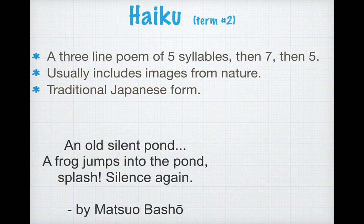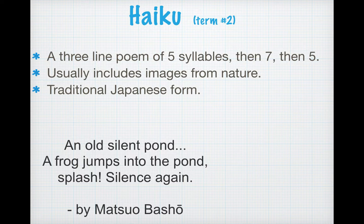I have an example for you. I'm going to read it with you. An old silent pond. A frog jumps into the pond. Splash. Silence. Again. This is by Matsuo Basho — he's a Japanese author. You can tell this is a haiku because it's only three lines. Let's count the syllables. An old silent pond — five syllables. A frog jumps into the pond — seven syllables. Splash. Silence. Again — five syllables. So we have five syllables, seven syllables, five. A haiku is a three-line poem: five, seven, five.